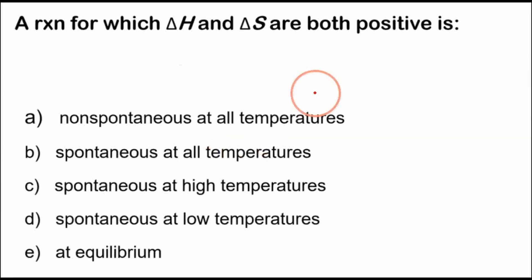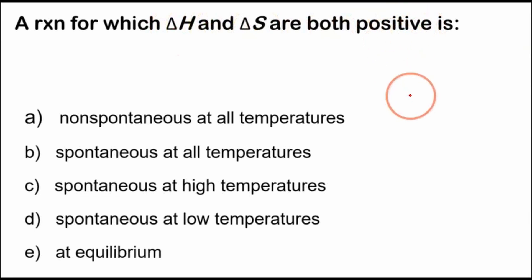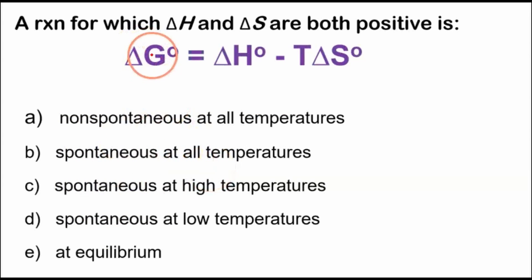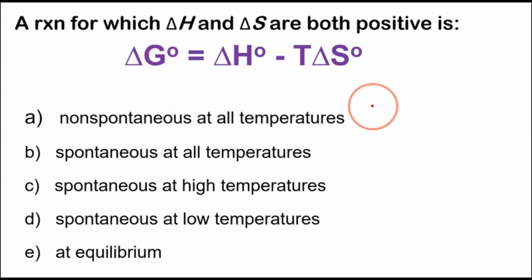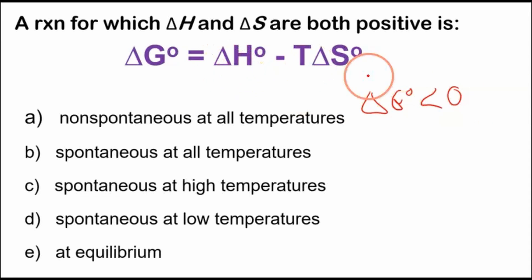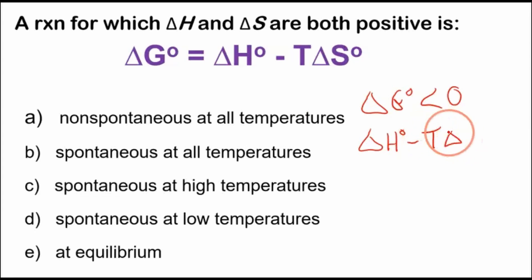A reaction for which the change in enthalpy and the change in entropy are both positive — is it spontaneous or non-spontaneous? To answer this, we look at the Gibbs energy equation. If we want to know if it's spontaneous, then the change in Gibbs energy has to be less than zero. That means the enthalpy change minus T times the change in entropy has to be less than zero as well.